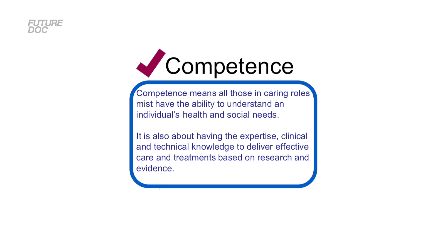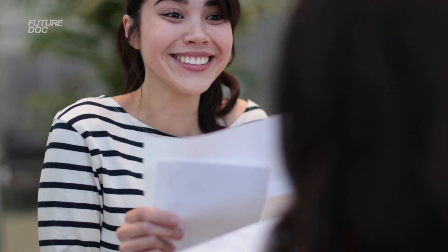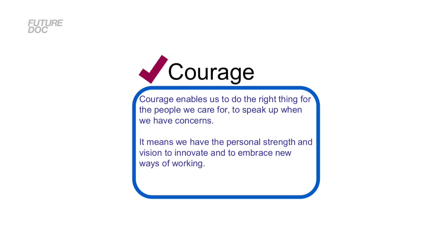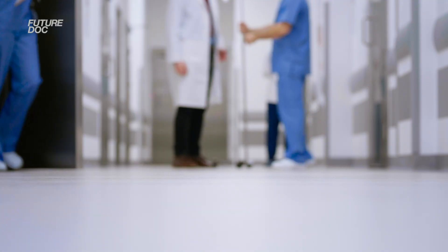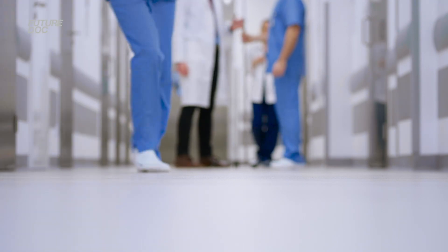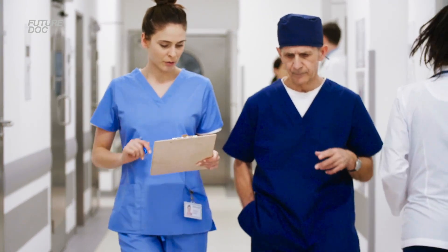Then there's competence. All those in caring roles must have the ability to understand an individual's health and social needs. Demonstrating competence means showing you have good ability — areas where you've excelled compared to your peers, prizes you've won, or even an EPQ where you got a great grade. The next is courage, which enables us to do the right thing for the people we care for and to speak up when we have concerns. Think of a time you helped support someone or spoke out when you saw somebody suffering an injustice or subpar care — perhaps during volunteering or hospital shadowing, alerting a senior when an issue wasn't being dealt with properly.